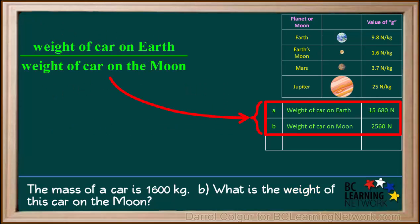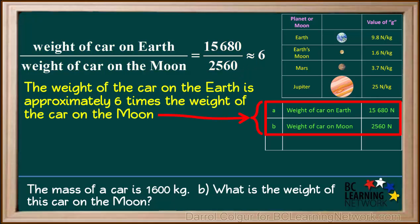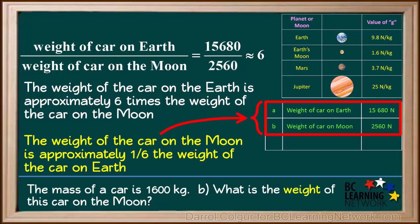Comparing the weight of the car on Earth and the Moon, the ratio of the weight on Earth to the weight on the Moon is 15,680 divided by 2,560, which is approximately 6. The weight of the car on Earth is approximately 6 times the weight on the Moon, which means the weight on the Moon is about one-sixth the weight on Earth.